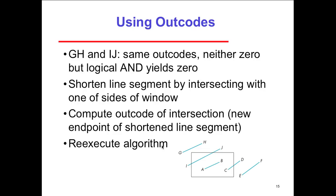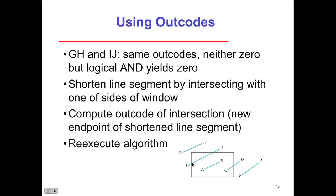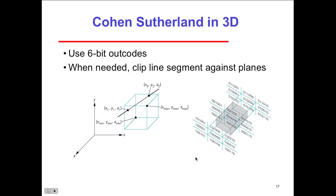In terms of efficiency: many applications have a clipping window small relative to the database size, so most line segments are outside and can be eliminated based on out codes without spending computational time. The inefficiency occurs when code has to be re-executed for line segments that must be shortened in more than one step — that would be very inefficient because two calculations must occur.